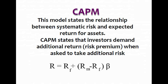The Capital Asset Pricing Model (CAPM) is an economic model for valuing a portfolio by relating its expected return and risk. It states the relationship between systematic risk and expected return. The idea behind CAPM is that investors demand an additional expected return — called a risk premium — when asked to accept additional risk above the risk-free asset. The risk premium varies in direct proportion to beta. The equation is: Return = Rf + (Rm − Rf) × β, where Rf is the risk-free rate, Rm is the market return, and (Rm − Rf) is the market risk premium.